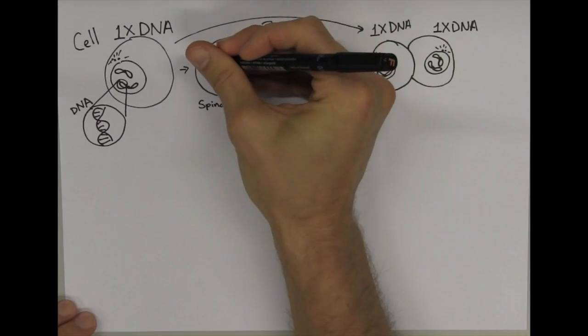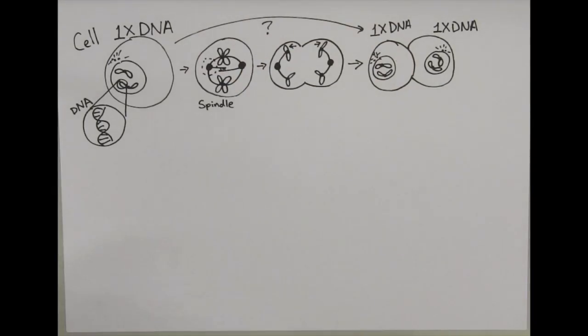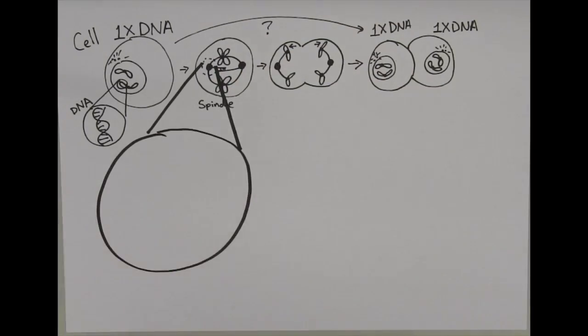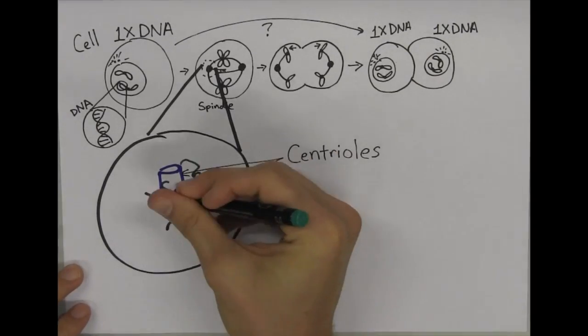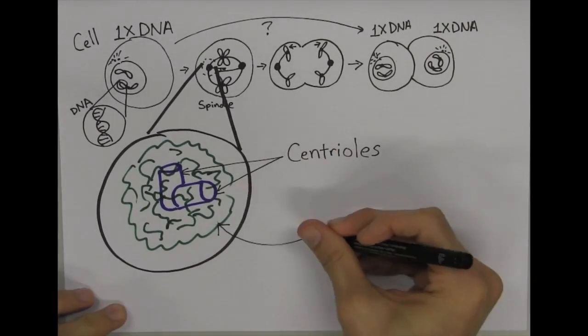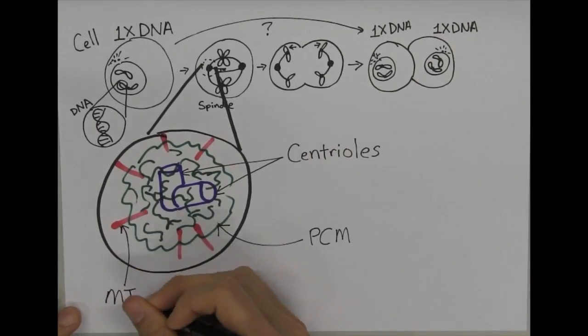The main microtubule organizing center in eukaryotic cells is the centrosome. It consists of two barrel-shaped centrioles surrounded by an amorphous interconnected mass of protein called the pericentriolar material, or PCM.